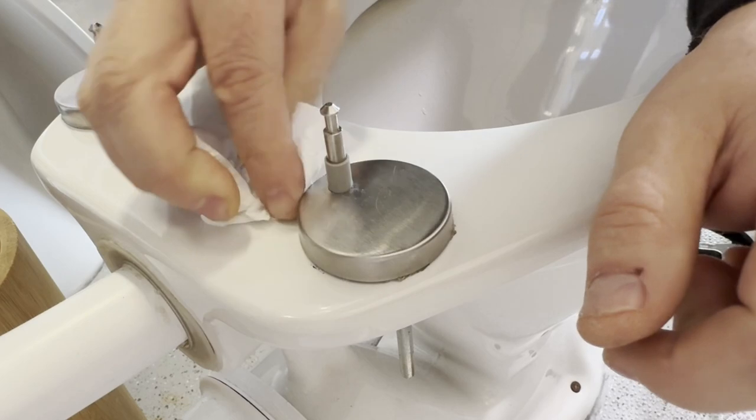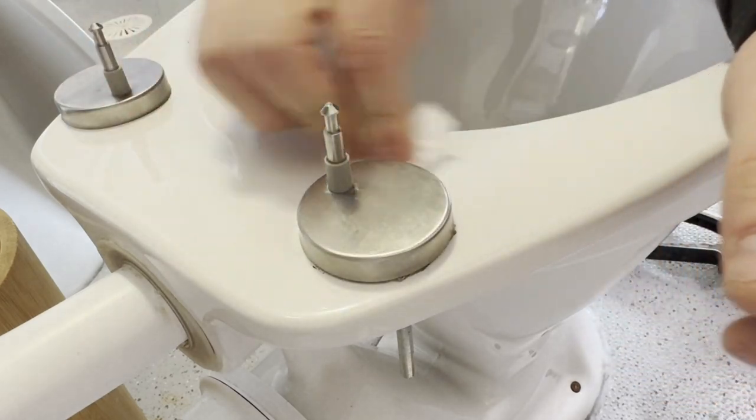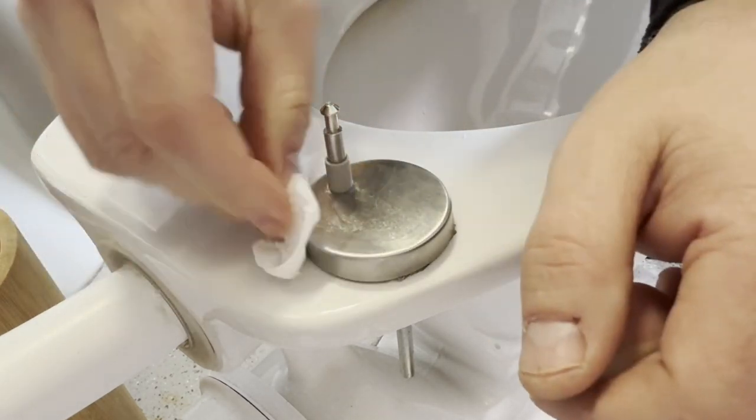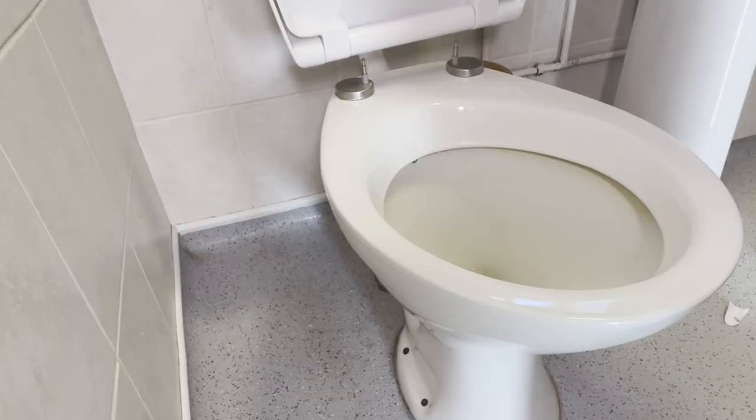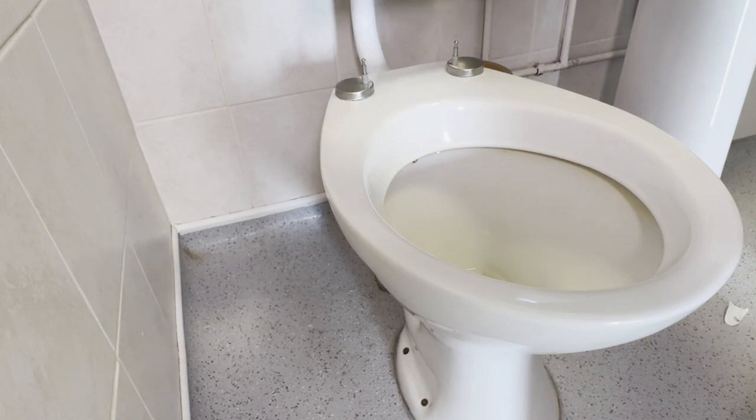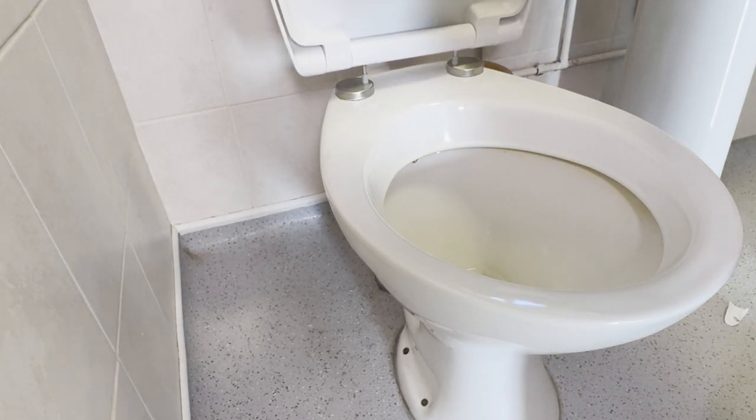Get those dry marker lines off. So now we reattach the toilet seat and actually just click it in place.